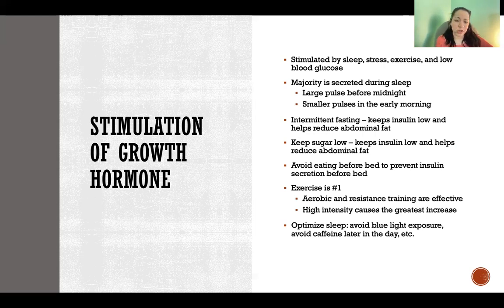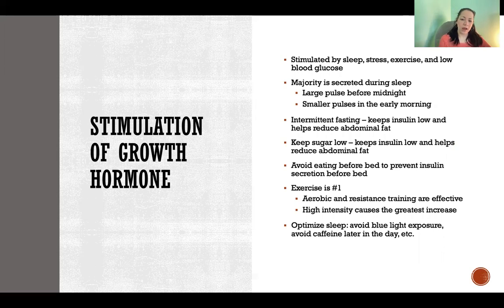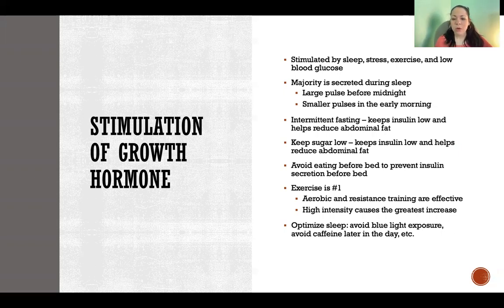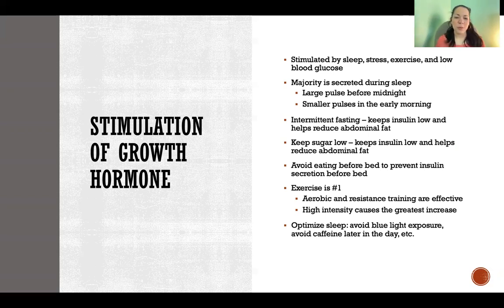Exercise might be the number one thing you can do to increase your growth hormone production. Aerobic and resistance training have both been found to be effective in stimulating production, and higher intensity leads to a higher amount of secretion — but anything counts, it all helps. It's not about duration; it's the intensity. Greater intensity for a shorter time is going to have more of an effect on your growth hormone. And because sleep is so important for growth hormone, we want to optimize sleep — avoiding blue light before bed, not having too much caffeine later in the day. Whatever you can do to improve your sleep will improve your growth hormone secretion.